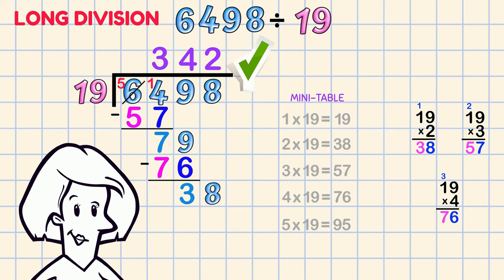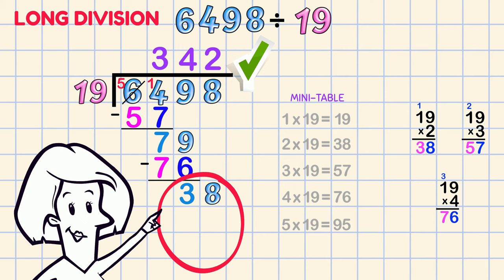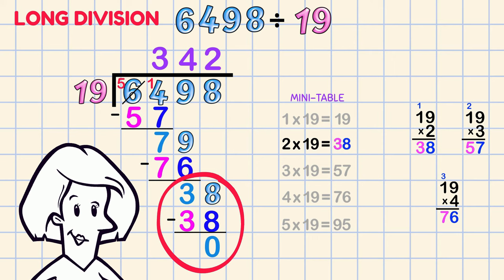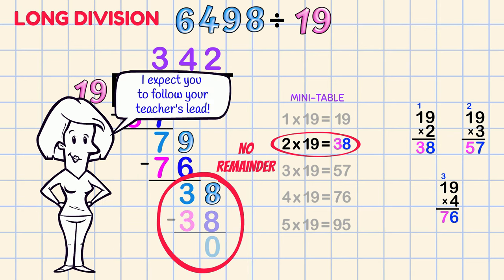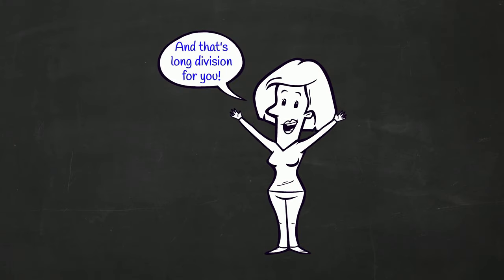On this final step your teacher might want you to show 38 minus 38 is 0. For me, as this is the concluding part and we can see from the mini table that there is no remainder, I'm happy NOT writing out that subtraction, but I expect YOU to follow your teacher's lead. And that's long division for you!